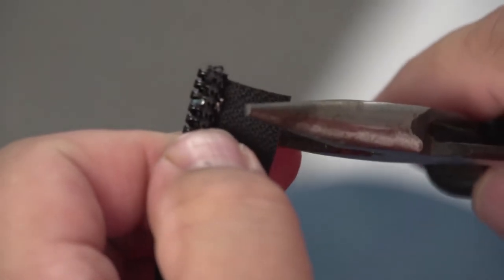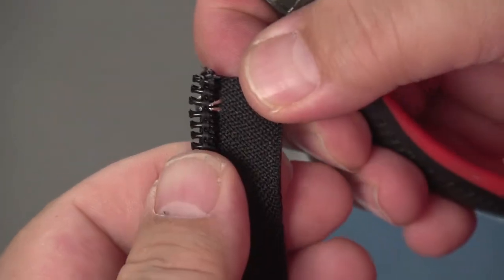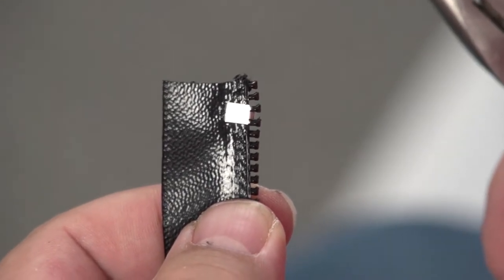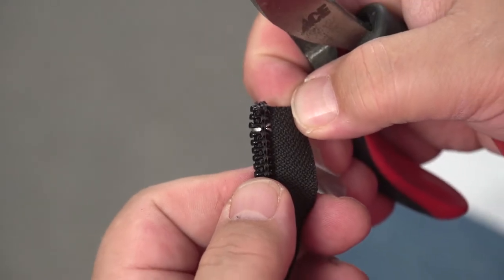This is how a metal top stop is installed on a finished or continuous link coil zipper. If you order a finished coil zipper the manufacturer will have the stops already installed on the ends, but if you need to cut the finished zipper down in size and install new stops this is how it is done.